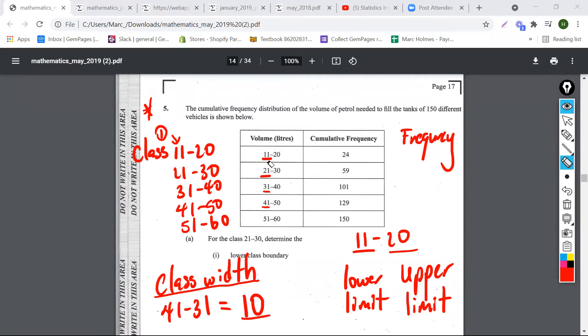So basically, to find the class width for any table that you get, you just need to subtract two consecutive numbers—the 11 from the 21 or the 20 from the 30—and that will give you the class width. This is a question that they usually ask on exams.